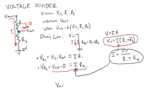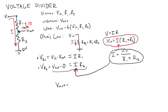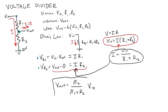So I have V out equals R2 over R1 plus R2 times V in. And there is my final voltage divider equation.